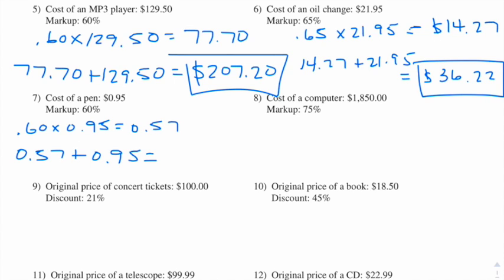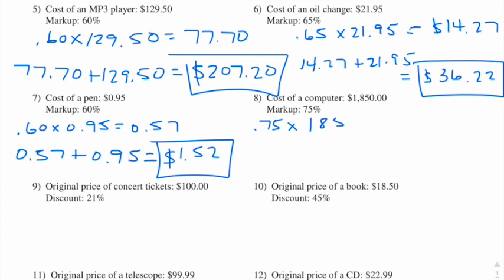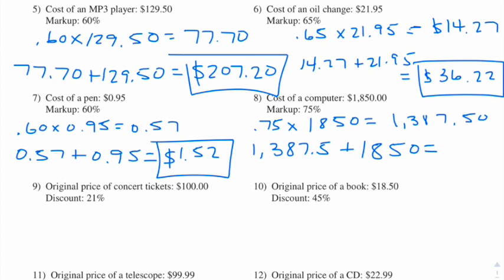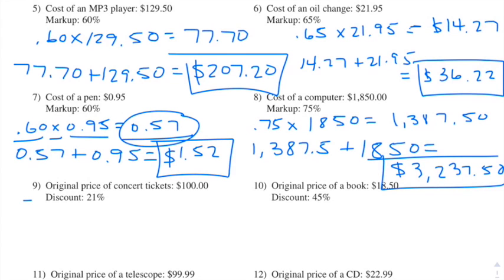Number eight: we're taking 75% of $1,850 — that's 0.75 times 1850 — and we end up getting $1,387.50. So we're adding $1,387.50 plus the original amount of $1,850, and we get $3,237.50. That's our final answer.